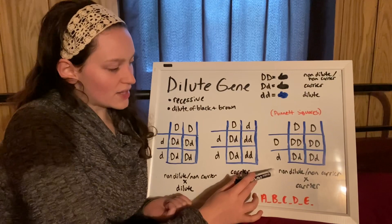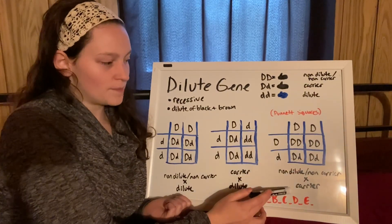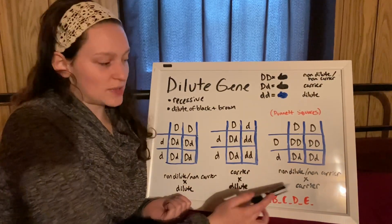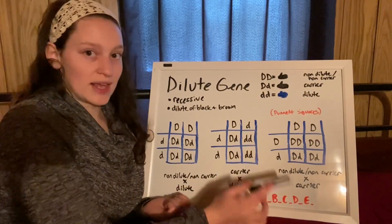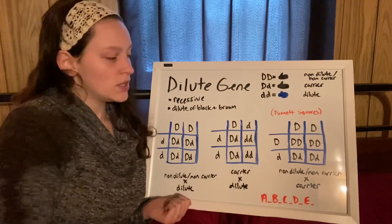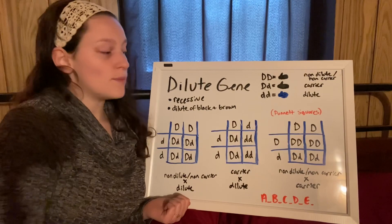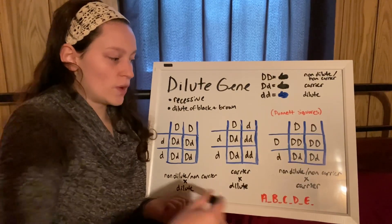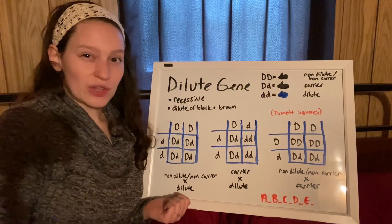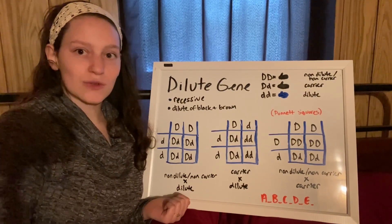Over here, we've got a non-dilute, non-carrier to a carrier. These are two non-dilute animals, but the carrier has that dilute gene hidden. You're going to get half or so non-dilute, non-carriers, and also half or so non-dilute carriers. The only way to truly find out if a rabbit carries something or not is through test breeding.